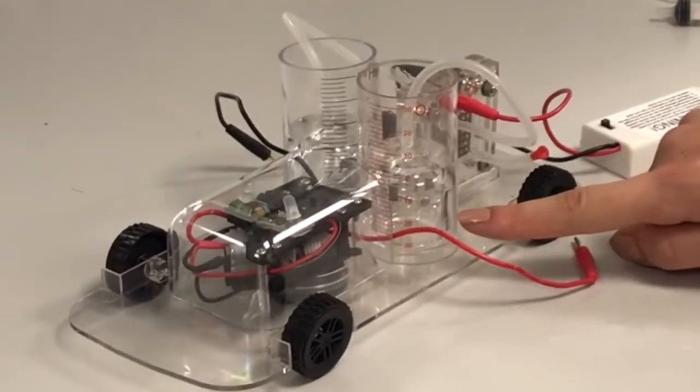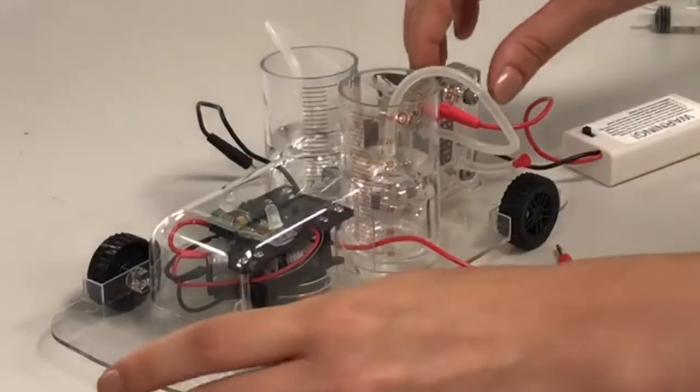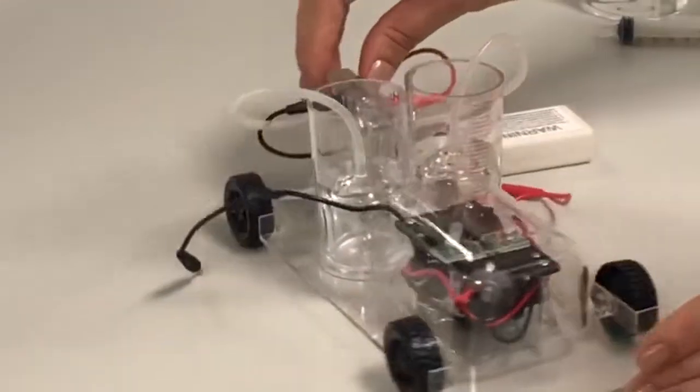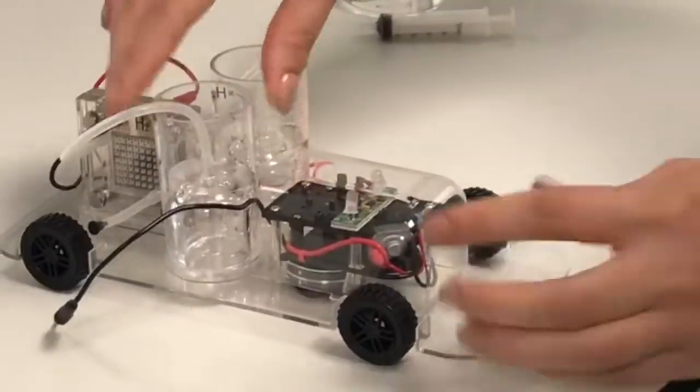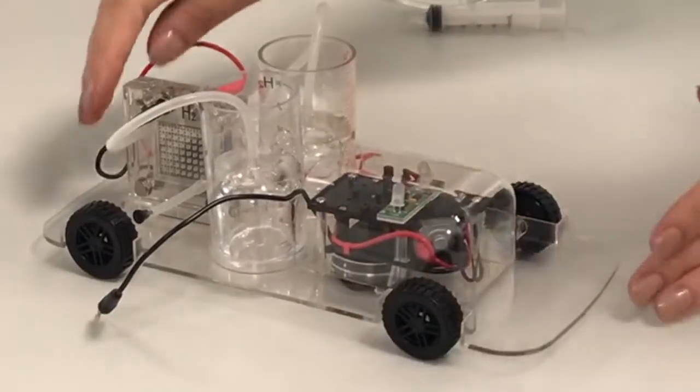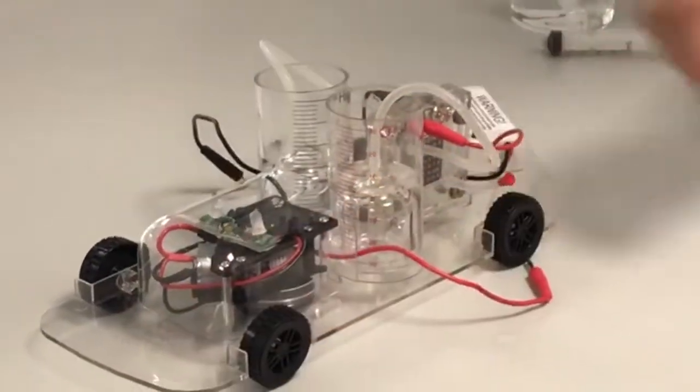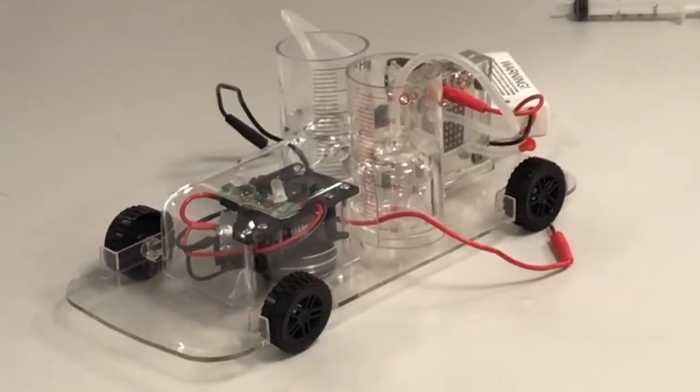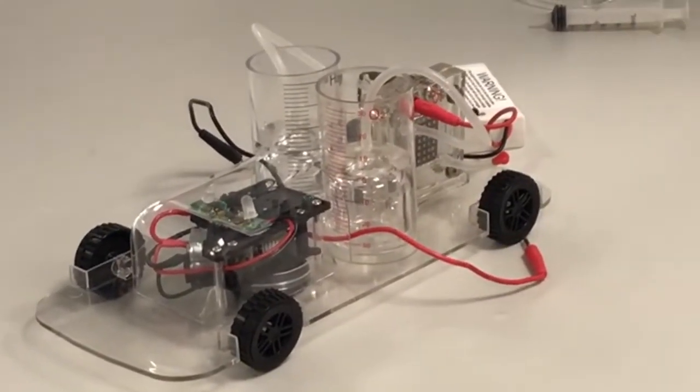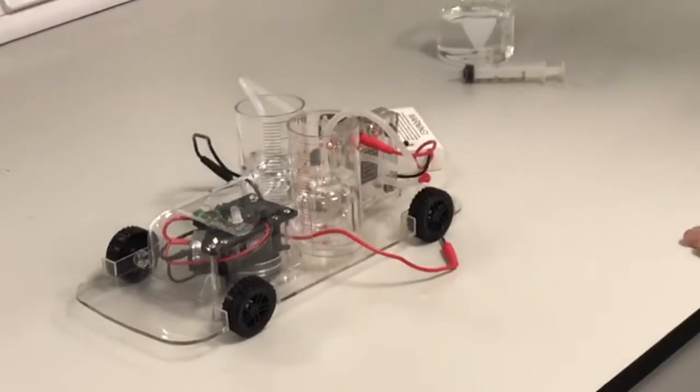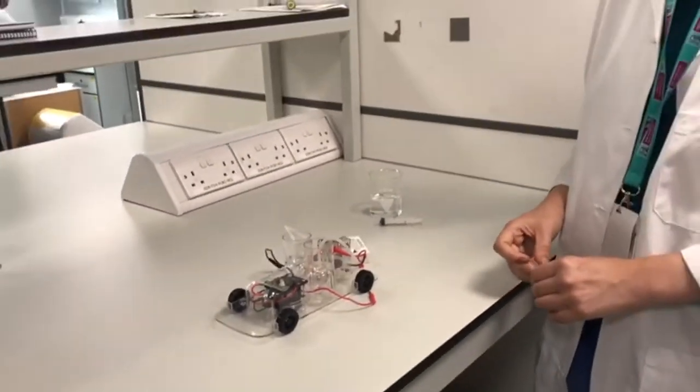Here we have the oxygen being formed at the anode and being collected here. And on the other side, tiny bubbles of hydrogen from the cathode. Pretty cool if I do say so myself.